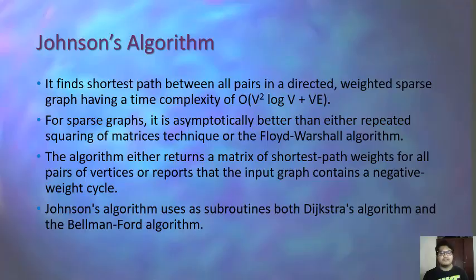Hello everyone, my name is Vikram and I am continuing this presentation on Johnson's algorithm. Johnson's algorithm finds the shortest path between all pairs in a directed weighted sparse graph, with a time complexity of O(V² log V + VE), where V is the number of vertices and E is the number of edges. For sparse graphs it is asymptotically better than the repeated squaring of matrices or the Floyd-Warshall algorithm. The algorithm uses two subroutines: Dijkstra's algorithm and the Bellman-Ford algorithm.